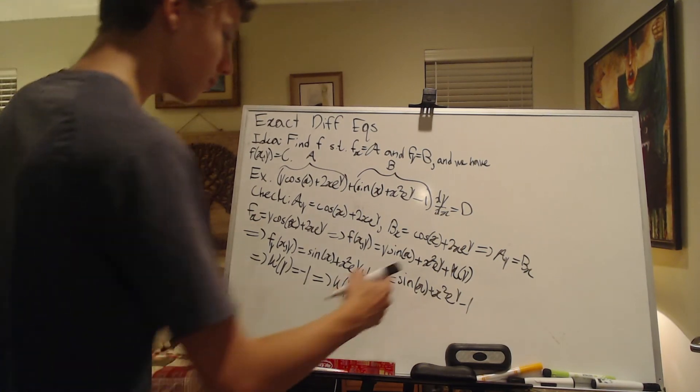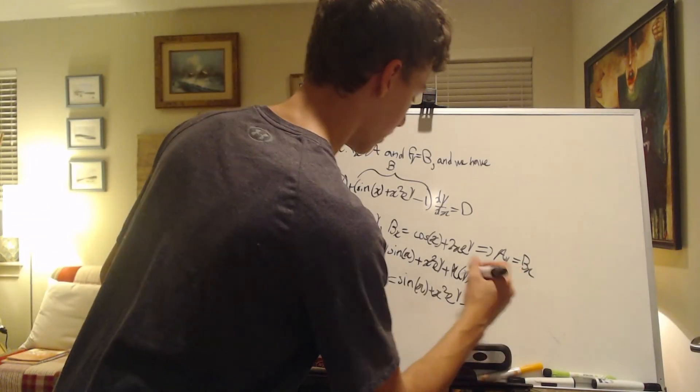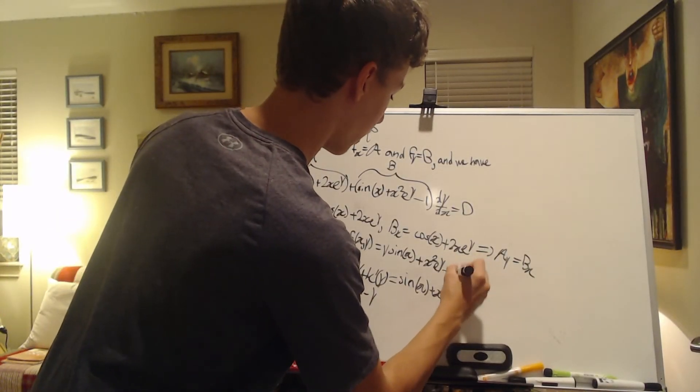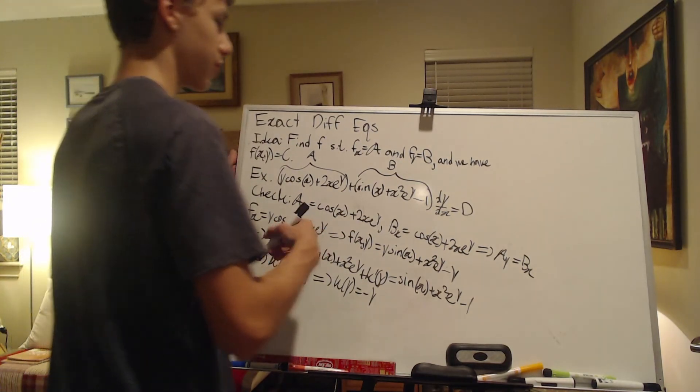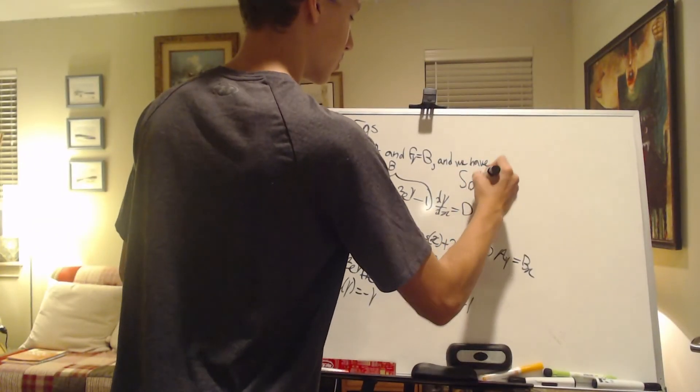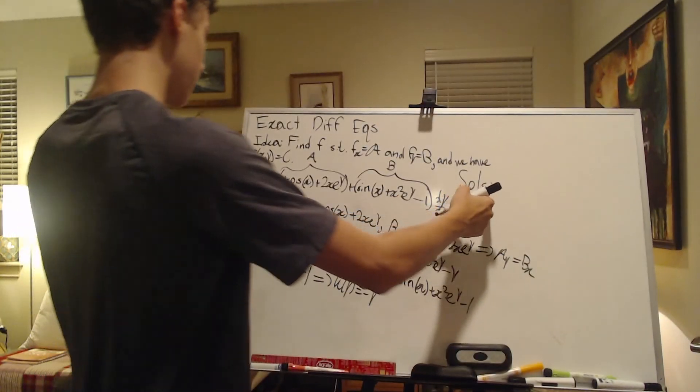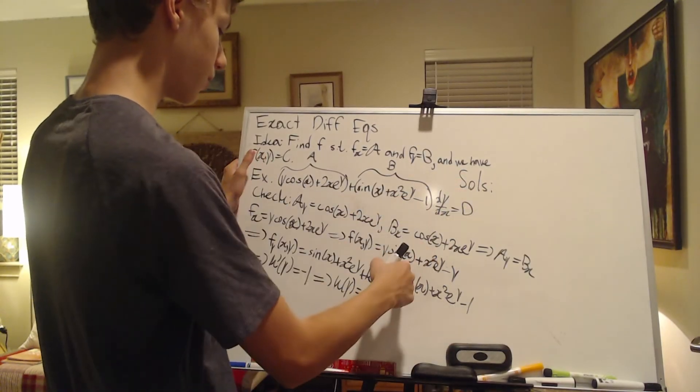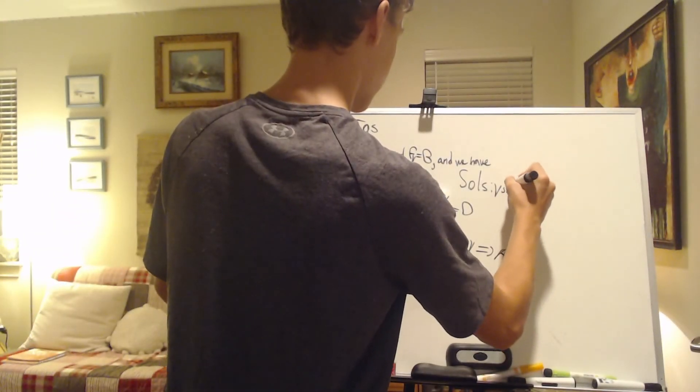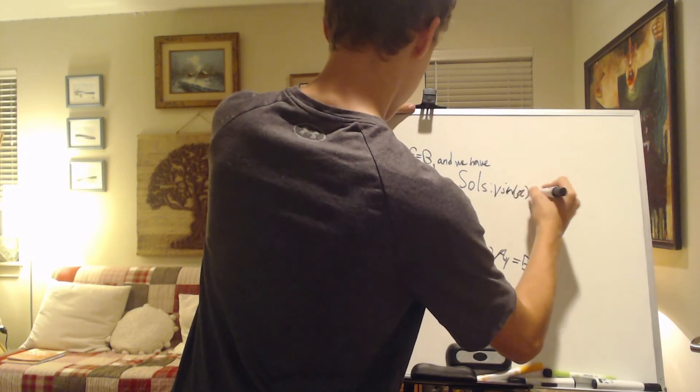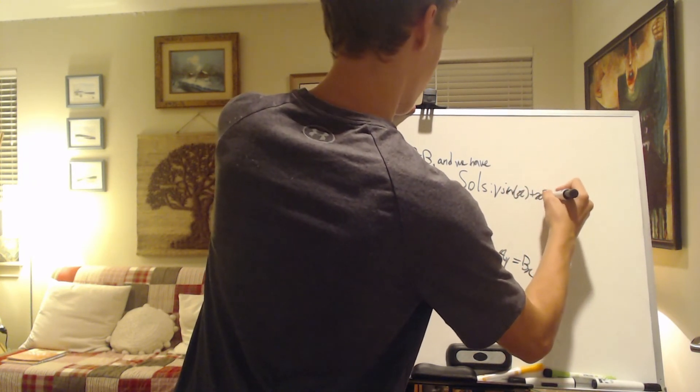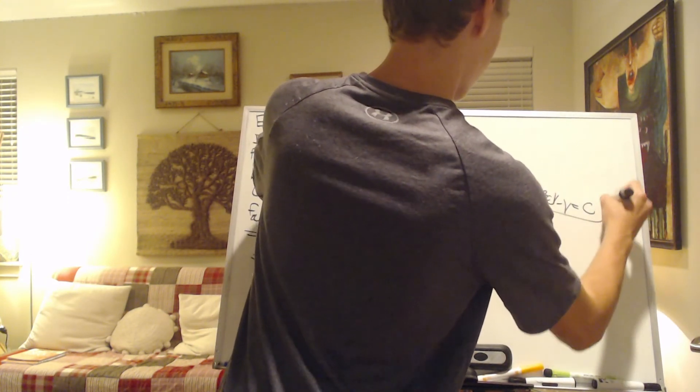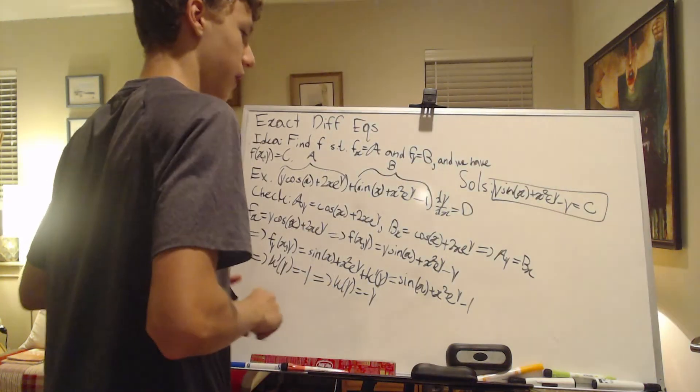Namely, what we're left with here is that I'm just going to replace this with minus y. And so what are our solutions? So solutions. They're given implicitly by the following. So f of x, y is equal to c. So what is f of x, y? It's this. So sine y sine x plus x squared e to the y minus y equals some constant. And that is the solution to this example.